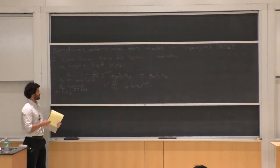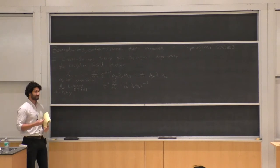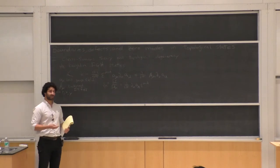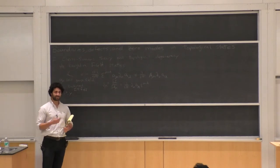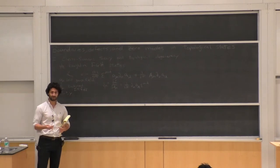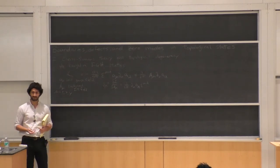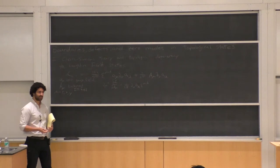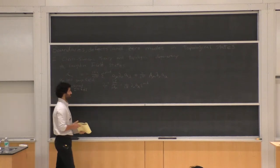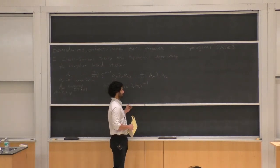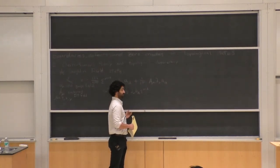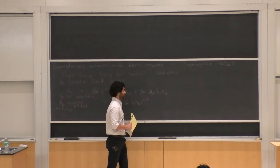The 1/M Laughlin state has quasiparticle excitations which carry fractional charge and fractional statistics. How do we describe those quasiparticles in this effective theory?